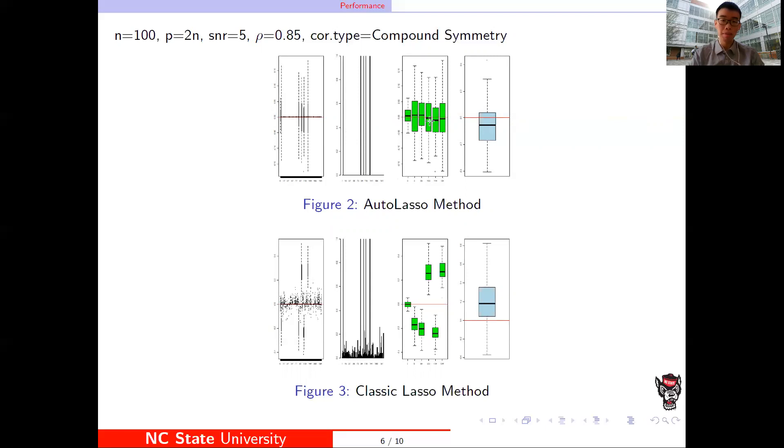The third part is called the biases of the active variable. You can see here the AutoLasso method is much better than the classical Lasso method. The last part is called the relative bias of the sigma square, which is almost the same.